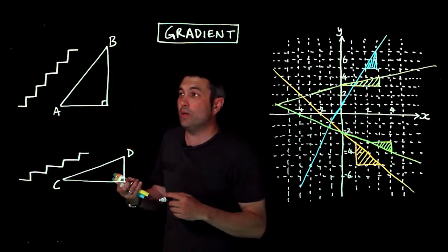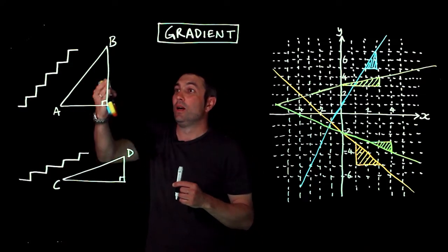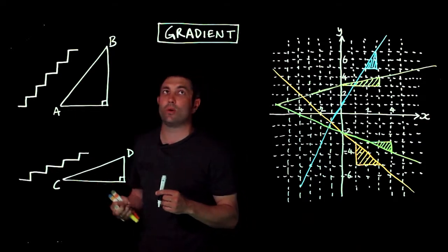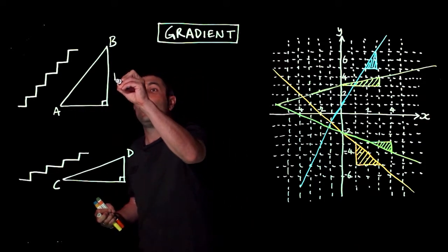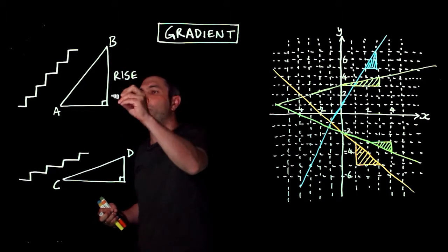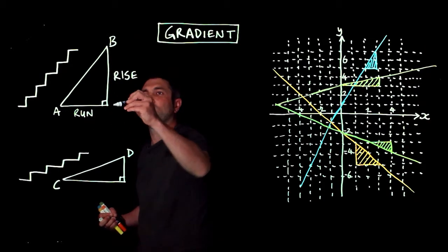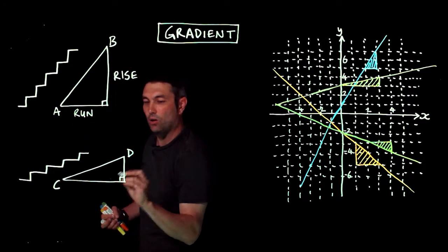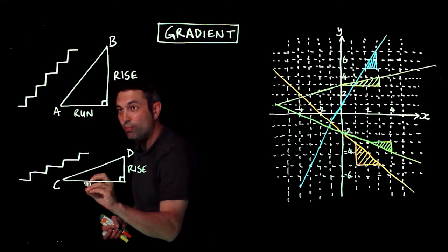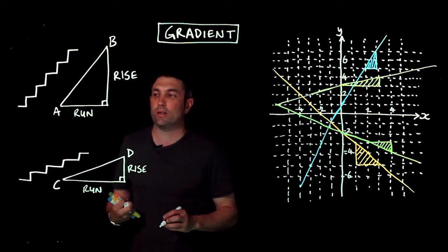We need to put a numeric value onto this concept of gradient, slope, or steepness. What we do is measure the rise — that's how far you've gone up — and divide that by what we call the run. The rise is up, the run is along, and whatever numeric value you get will be the gradient of that line, showing how steep it is.